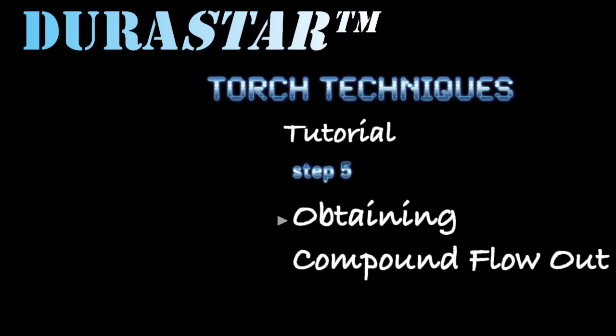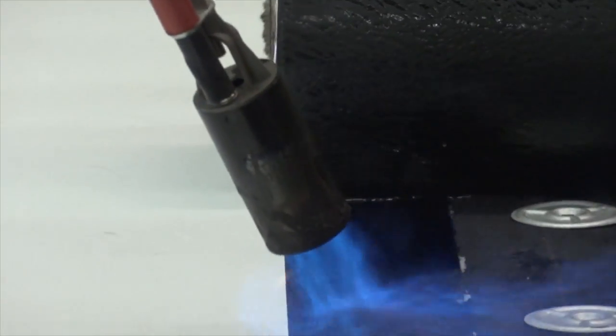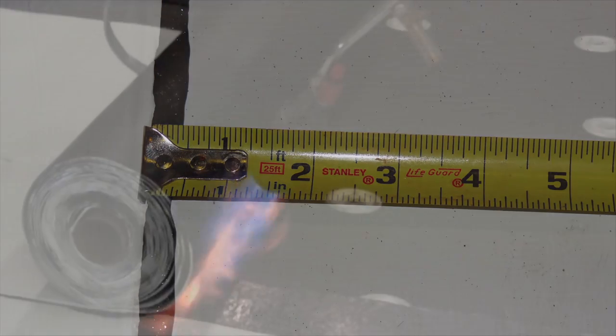Step 5: Obtaining Compound Flow-Out. As the membrane is heated, slowly unroll as the torch returns to the lap side, position 6, and continue repeating this cycle to ensure proper adhesion. A minimum of 1 quarter of an inch compound flow-out should be obtained at all seam areas.